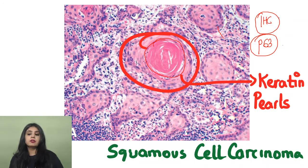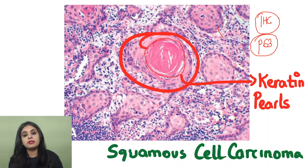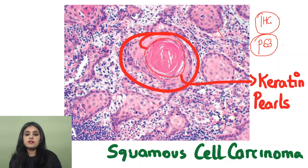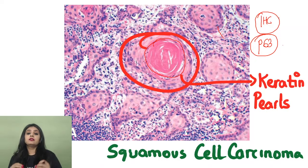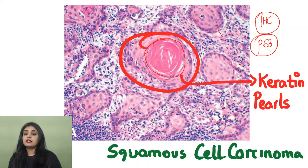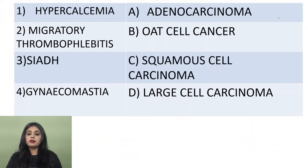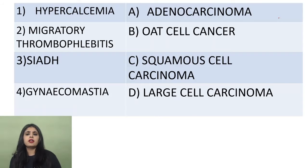Quick IHC revision: small cell carcinoma — synaptophysin and chromogranin; adenocarcinoma — TTF1 and Napsin A; squamous cell carcinoma — p63. These three tumor-marker pairs are important for match-the-following questions and all patterns the AIIMS exam might use to test lung tumors.